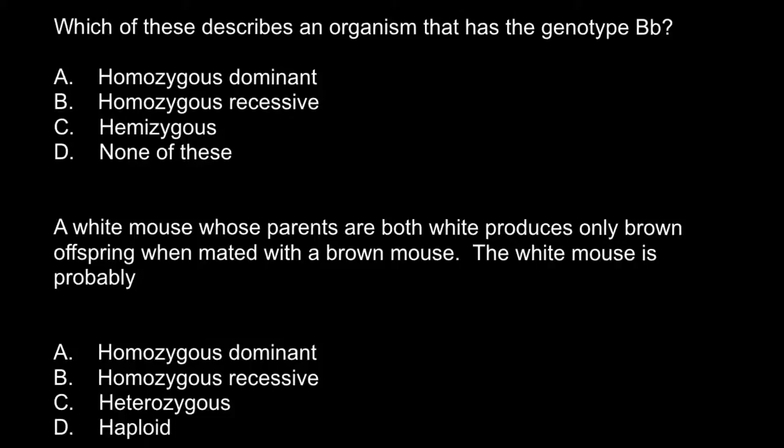And here is the first question. Which of these describes an organism that has the genotype capital B small b? Answer A homozygous dominant would be genotype capital B capital B. Answer B homozygous recessive would be small b small b, and hemizygous.